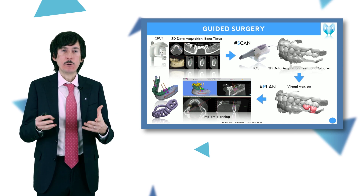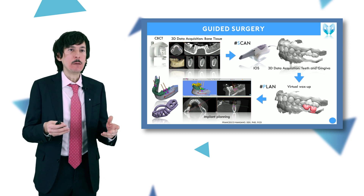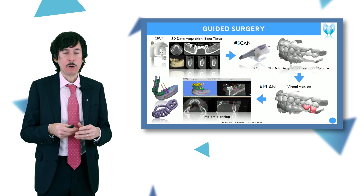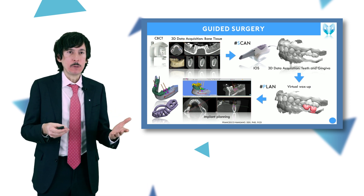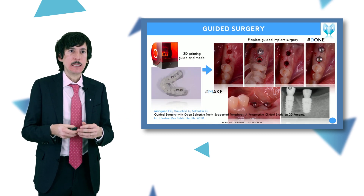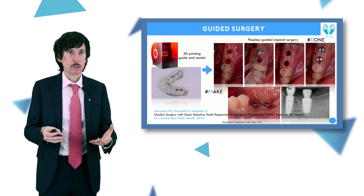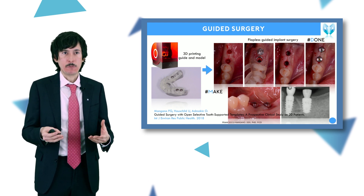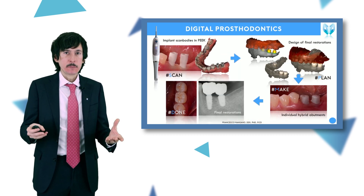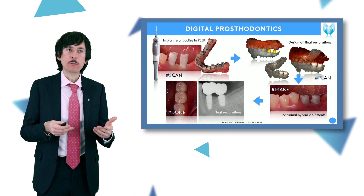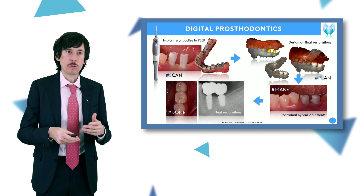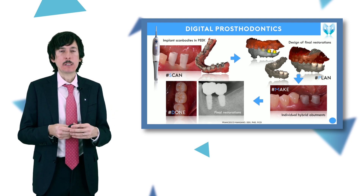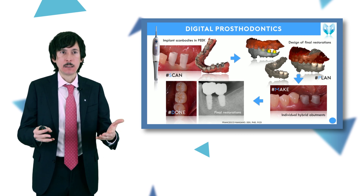For guided surgery, for example, we create a virtual wax-up and then plan our implants according to prosthetic information and available bone. We plan our implant position, depth, inclination, and then design our surgical guide. We print the surgical guide and use it on patients, proceeding flapless and minimally invasive. After one or two months we continue with digital prosthodontics — using implant scan bodies to capture position, sending to the lab for individual abutments, crowns and bridges.